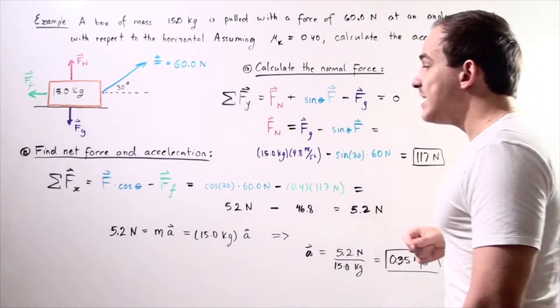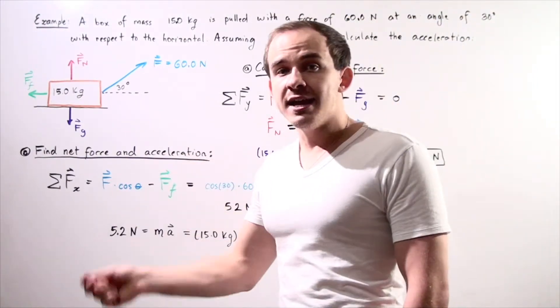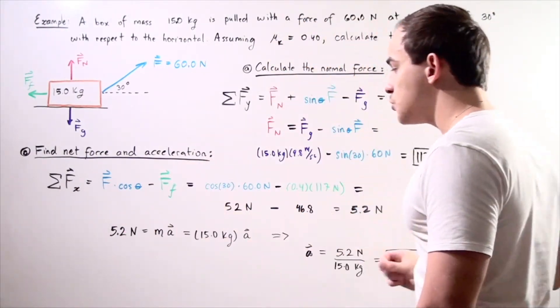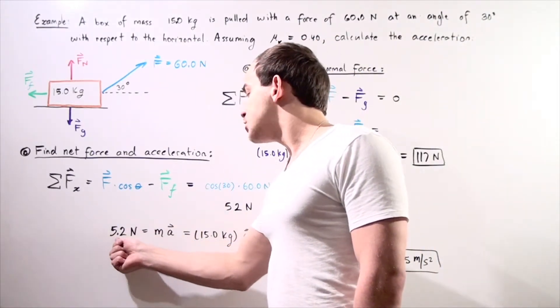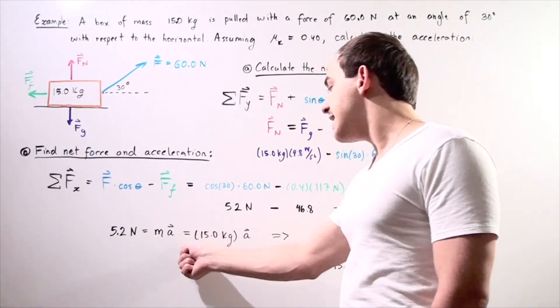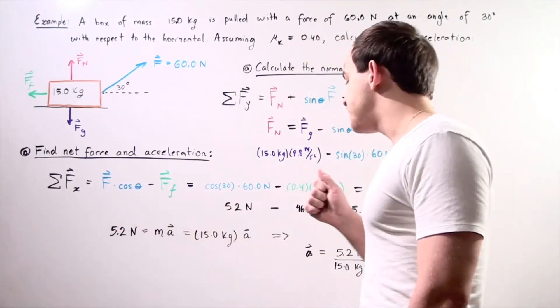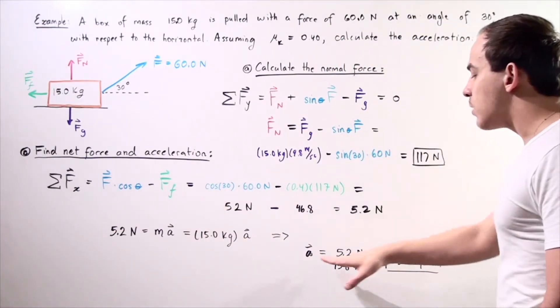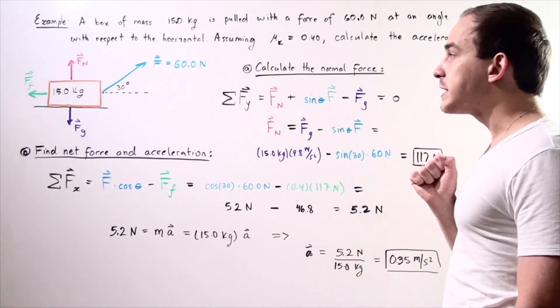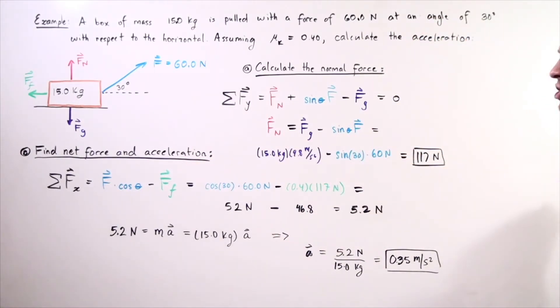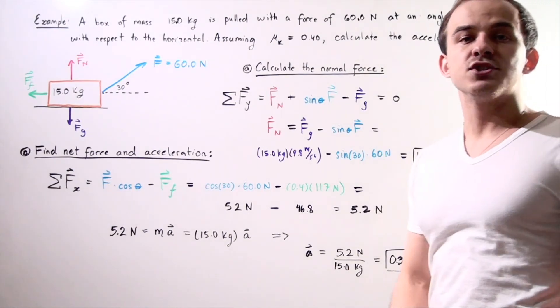We said this equals m times a according to the second law of motion. 5.2 equals 15 times a. We divide both sides by 15 and find that our acceleration of the object points in the positive direction along the x axis and has a value of 0.35 meters per second squared.